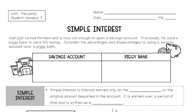There are a couple different kinds of interest, like compound interest and simple interest. In this lesson, we're just going to focus on simple interest. Before we get started, let's look at what we already know about saving money.